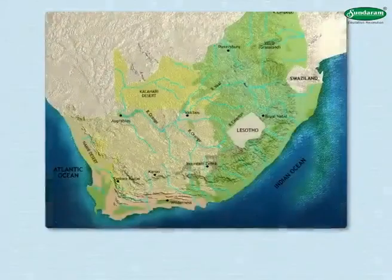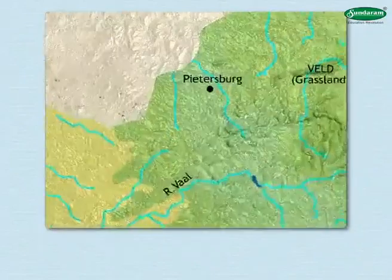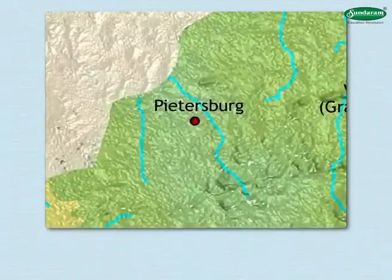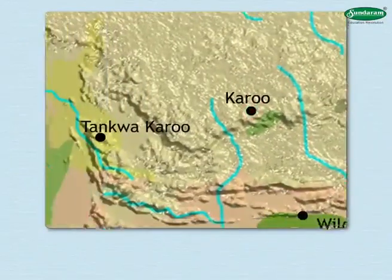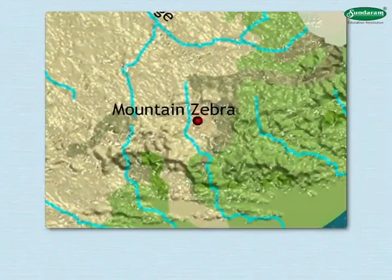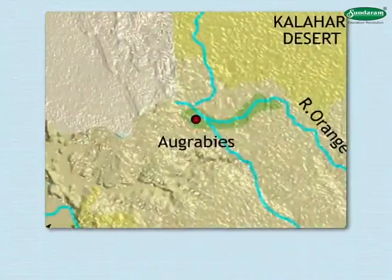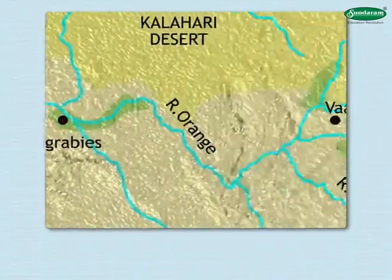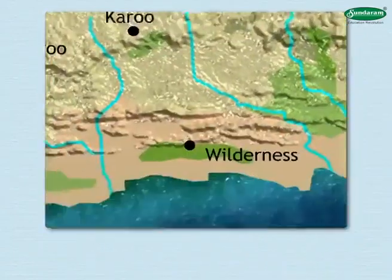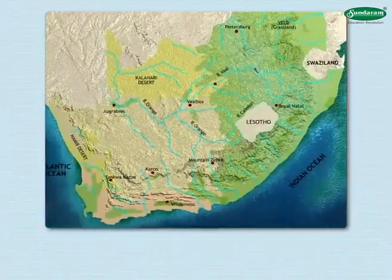See the map and make a list of the sanctuaries and national parks. Kruger, Karoo, Tankwa Karoo, Mountain Zebra, Royal Natal, Augrabies, Vaalbos and Wilderness are among the sanctuaries and national parks of South Africa.